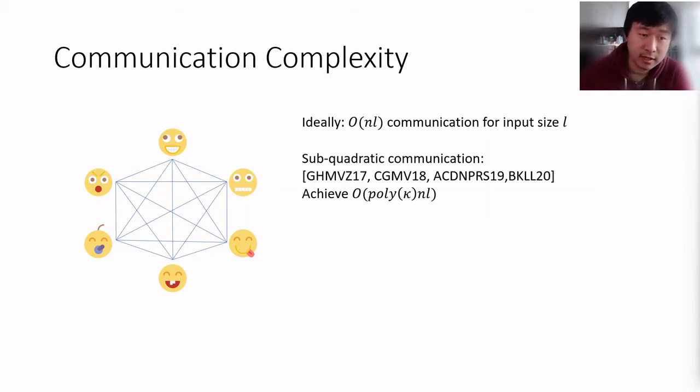So if we take the best, the most communication-efficient protocols that exist nowadays, these are sub-quadratic communication protocols, starting from the works of Algorand and some follow-ups afterwards. These protocols achieve a communication complexity that looks more like O of poly of kappa n times l, where kappa is some sort of security parameter.